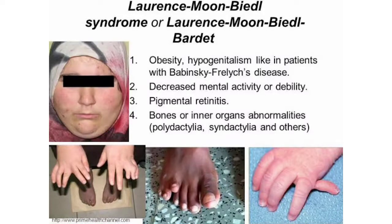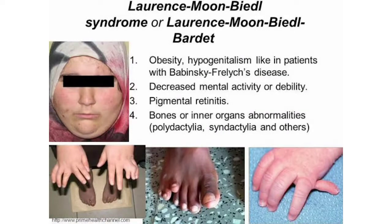There are also bone and internal organ abnormalities. Patients can have polydactyly, which means an increase in the number of fingers — 'poly' means more in number and 'dactyly' means fingers. Another feature is syndactyly, where 'syn' means joined, so the fingers are fused together. There can also be extra fingers and other skeletal features.